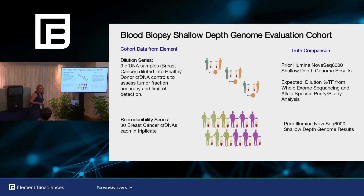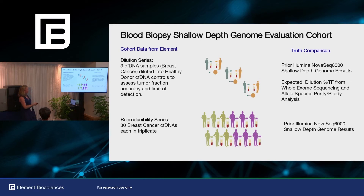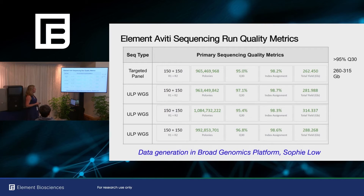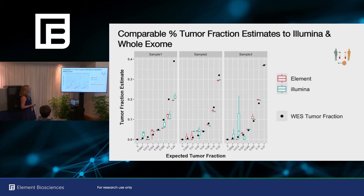All the sequencing was done by Sophie, who is sitting here, and was done in our lab — this isn't like we sent samples to Element to be sequenced. We actually operated the sequencer ourselves and heard great reviews about how easy it was to run. All of the sequencing lanes were greater than 95% Q30 bases, which are fabulous quality results. The yield ranged from about 262 to 315 gigabases.